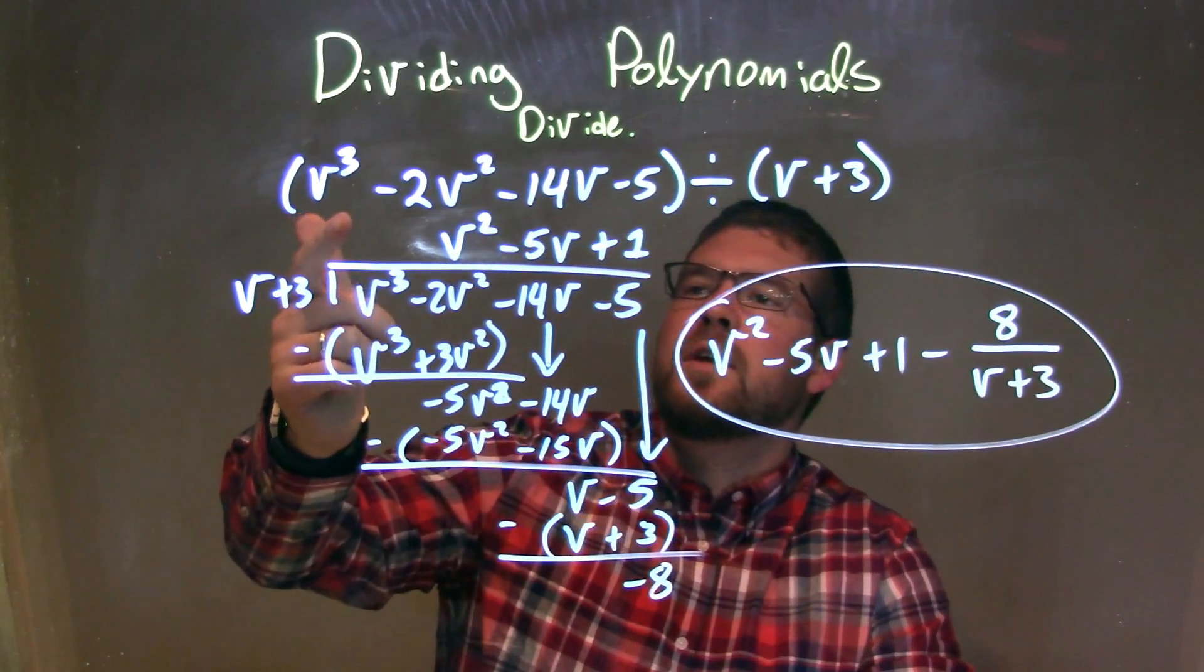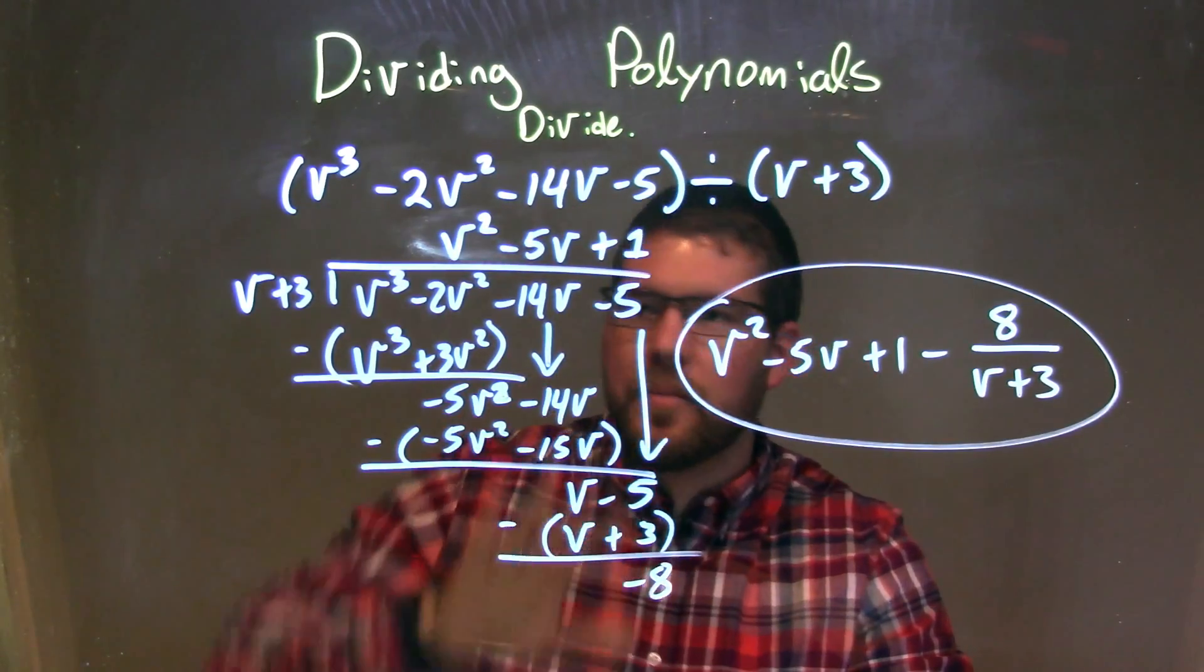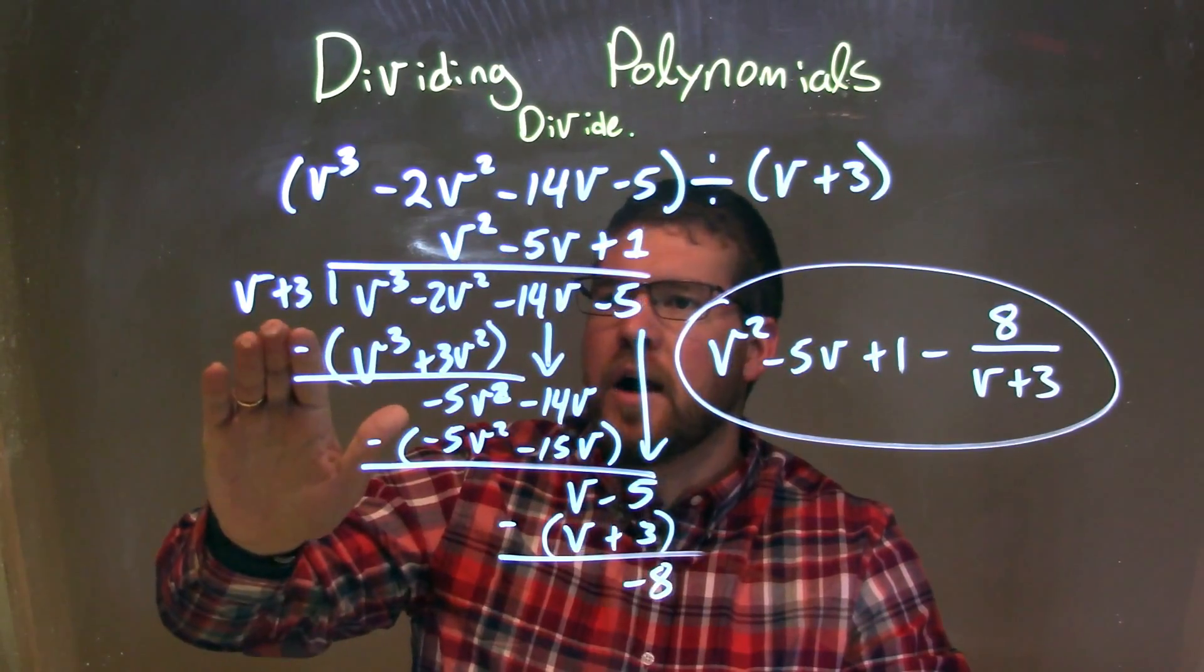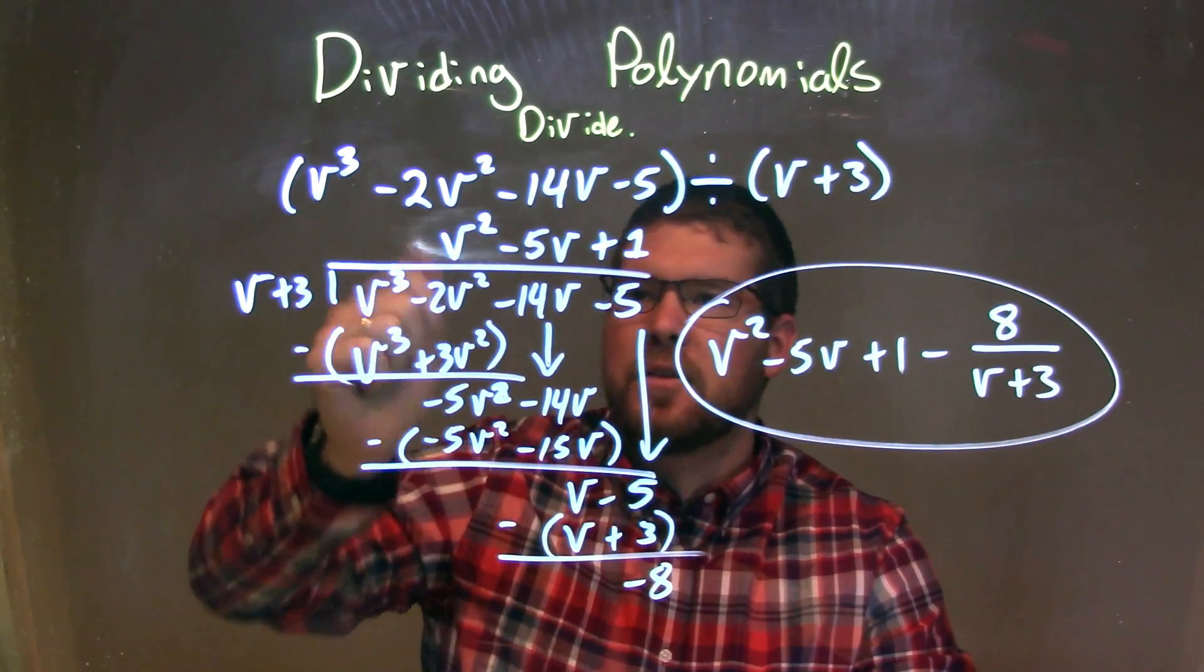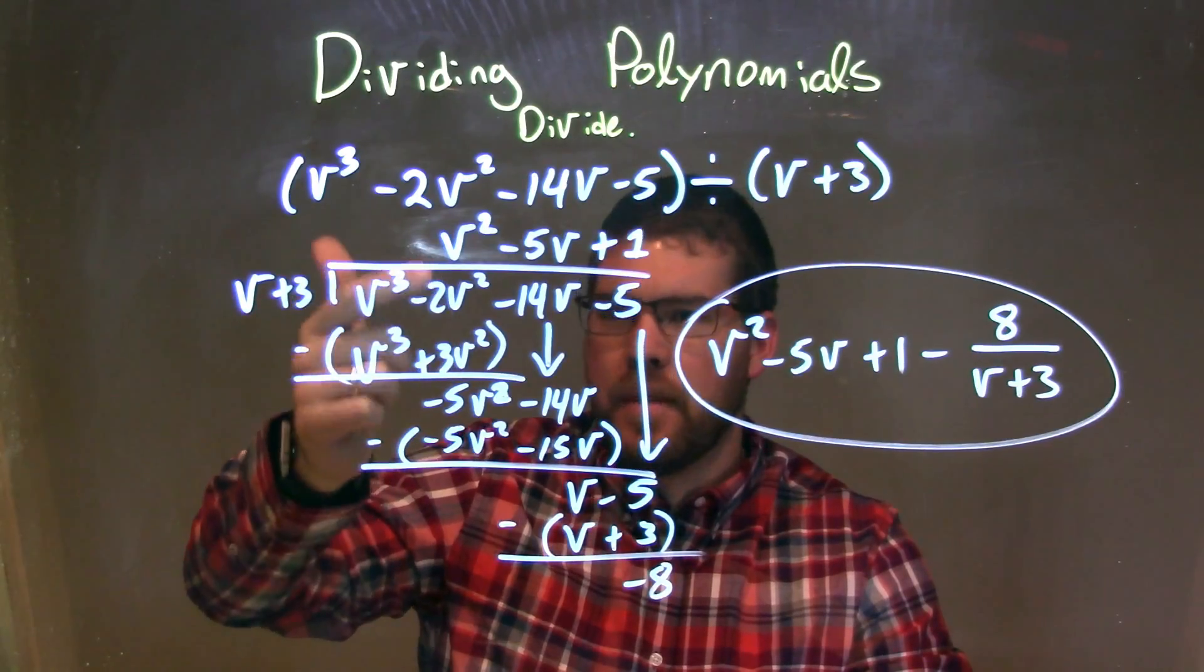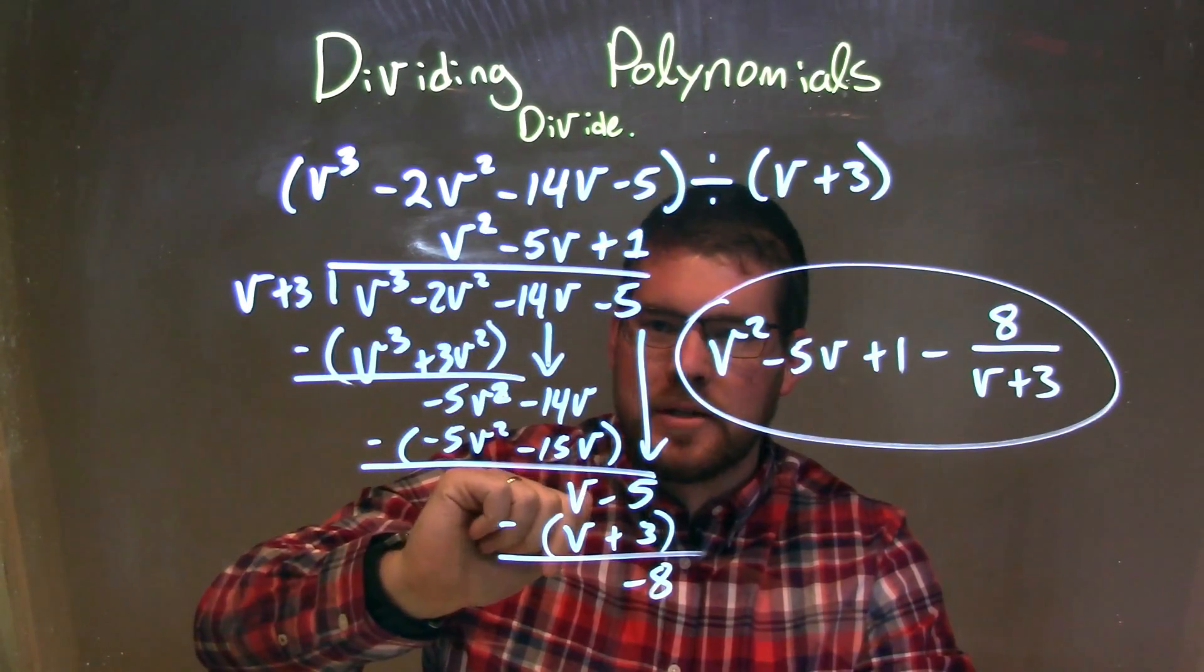So let's recap. We're going to be v³ - 2v² - 14v - 5 divided by v + 3. We wrote that in long division here. Divisor goes into my dividend. Ask the question, what times v get me v³? That's v². Multiply it to both parts here. That subtractor got me a -5v². Don't forget to bring down the -14v.